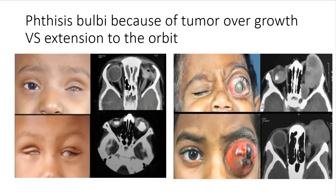Phthisis bulbi can also happen — the tumor regresses, and with it the whole eye. This patient has bilateral phthisis bulbi with intraocular calcification visible on CT scan, and this is a buphthalmic eye. Sometimes the tumor might overgrow and extend out of the orbit. As you can see, the eye has opened — this is actually the cornea — and the tumor is going back and extending to the brain. This other tumor has extended to the outer surface.